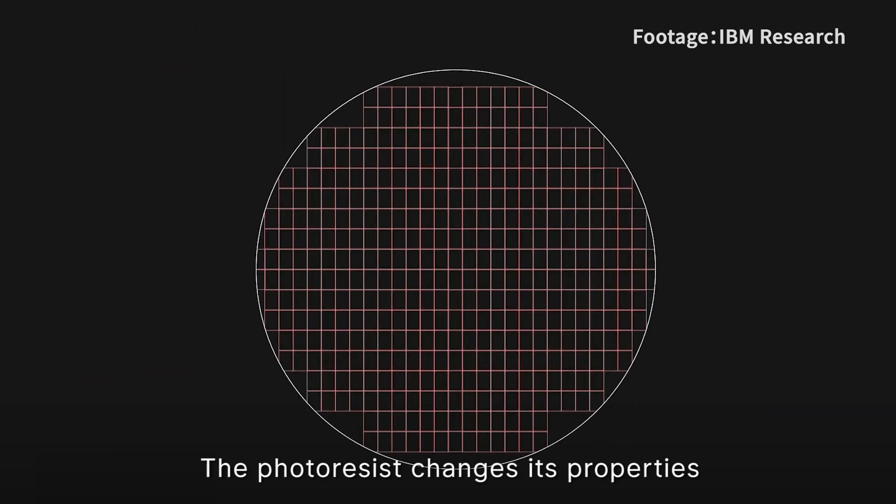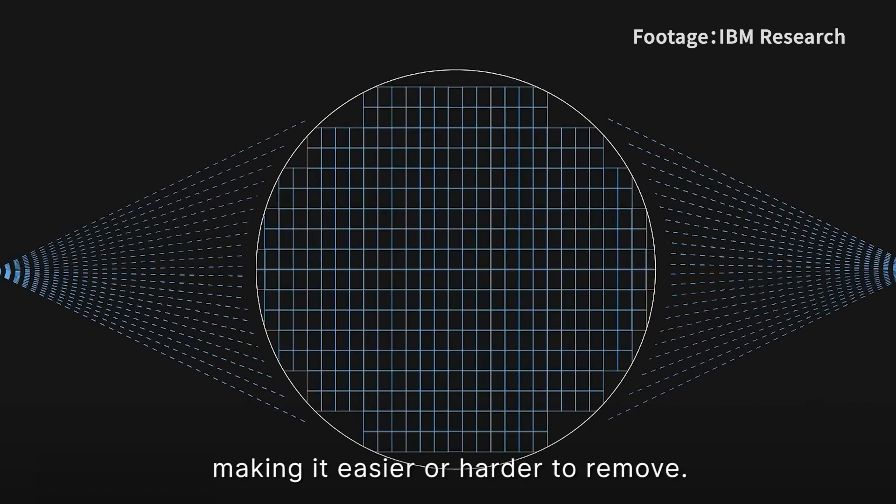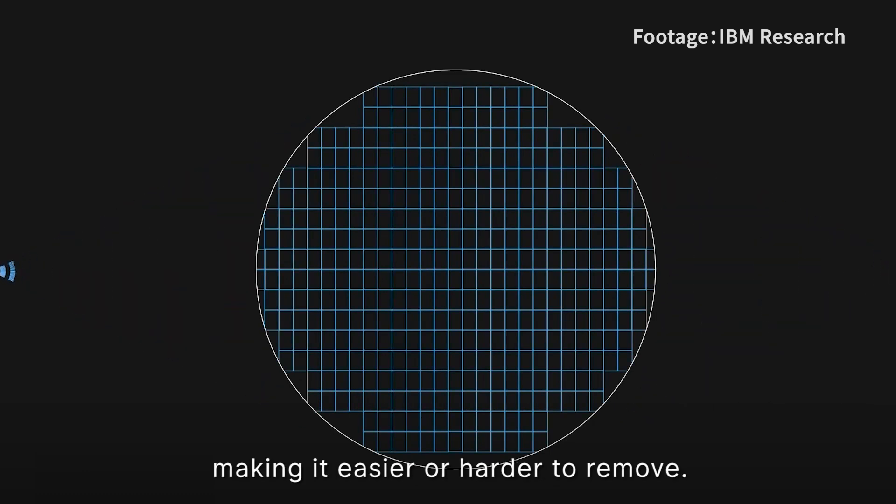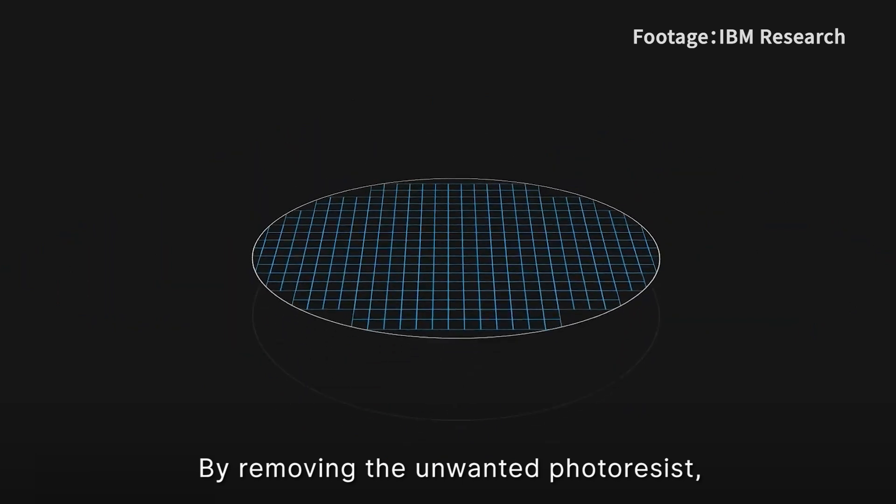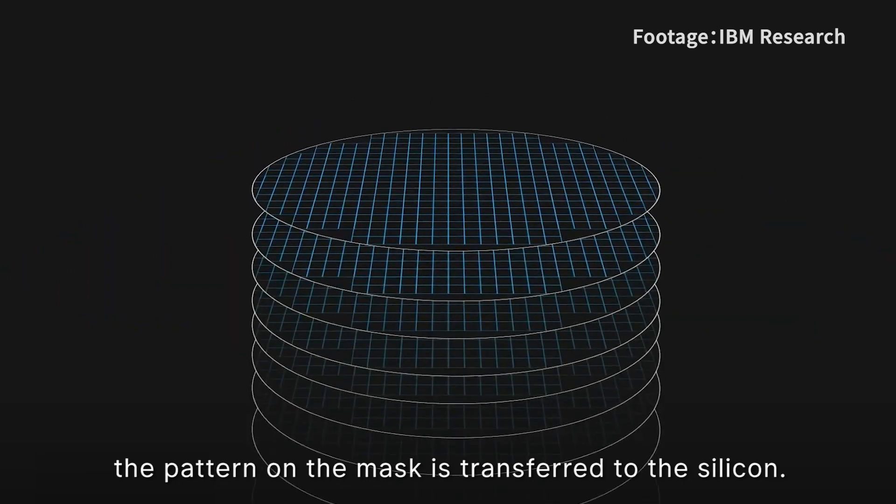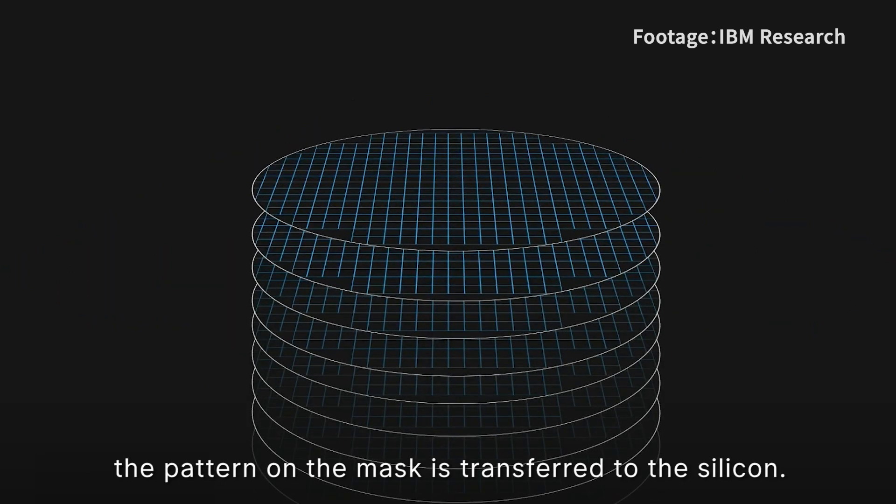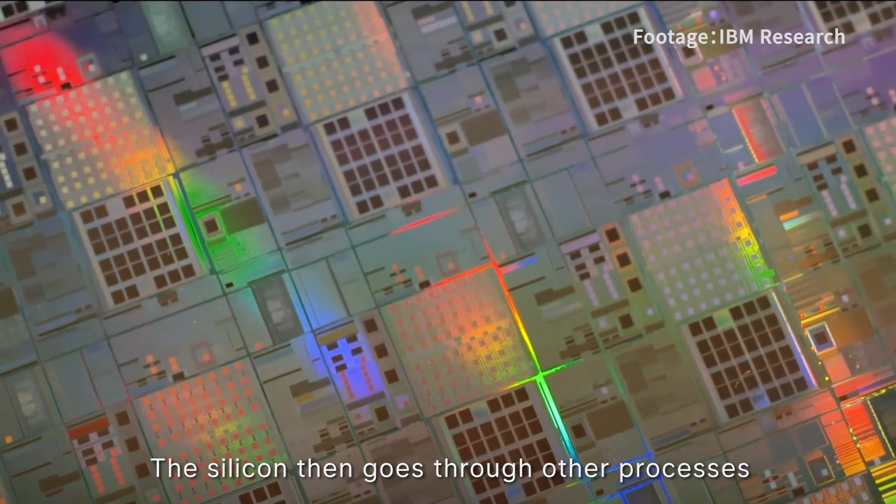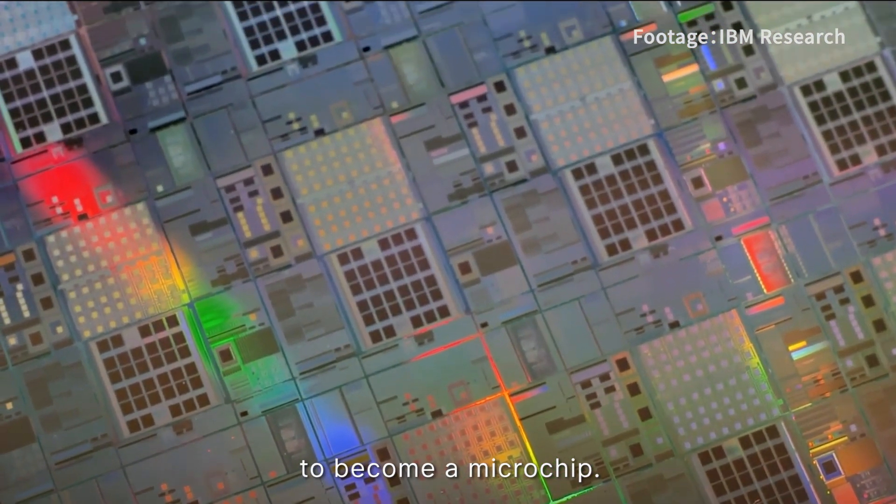The photoresist changes properties when exposed to light, making it easier or harder to remove. By removing the unwanted photoresist, the pattern on the mask is transferred to the silicon. The silicon then goes through other processes to become a microchip.